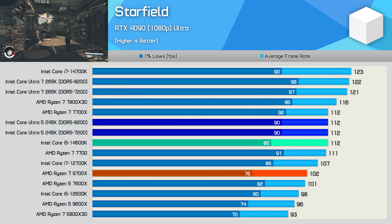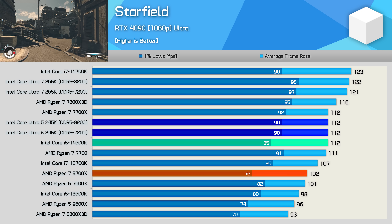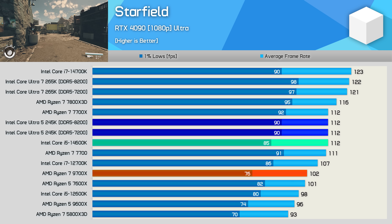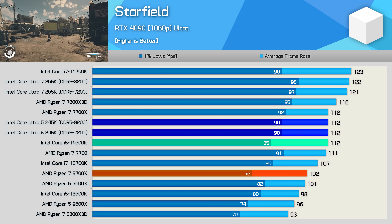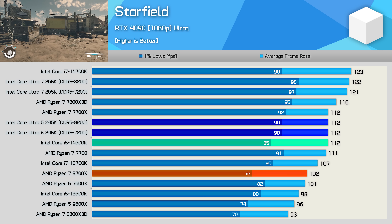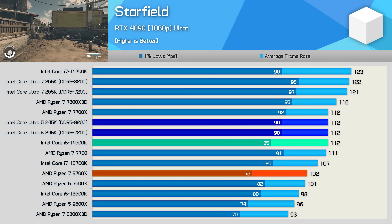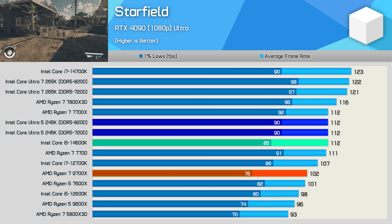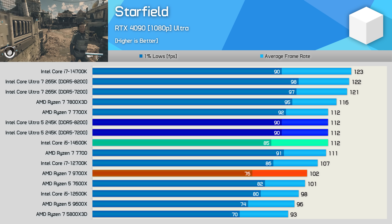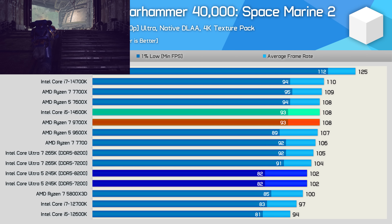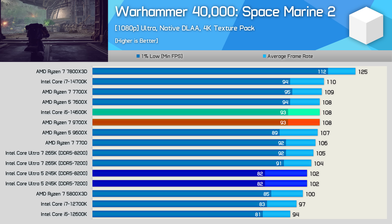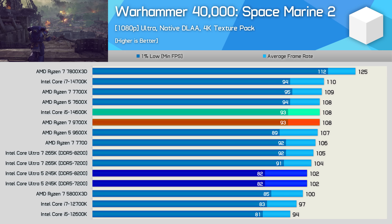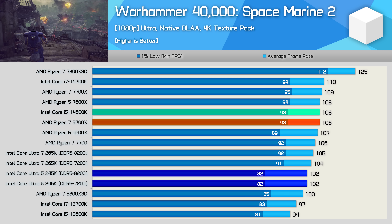Starfield is one of the few games where Arrow Lake CPUs look okay — while just matching the 14600K is hardly impressive, the 245K was 10% faster than the 9700X, which seems to perform poorly in this title for some reason. Space Marine 2 results are pretty weak though, with the 245K slower than both the 14600K and 9700X by a 6% margin.